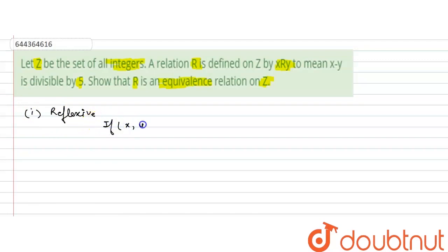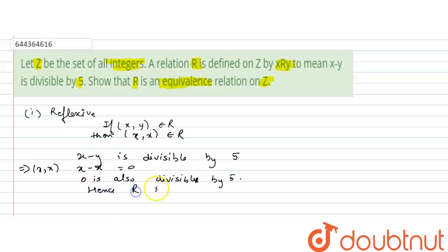According to reflexive relation, if (x,y) belongs to R, then (x,x) should also belong to R. So, according to given, x minus y is divisible by 5. So, (x,x) will be x minus x equals 0, and 0 is also divisible by 5. Hence, R is reflexive.